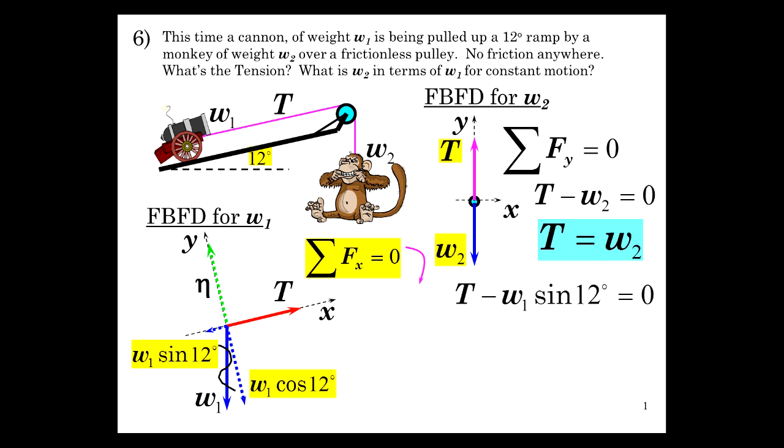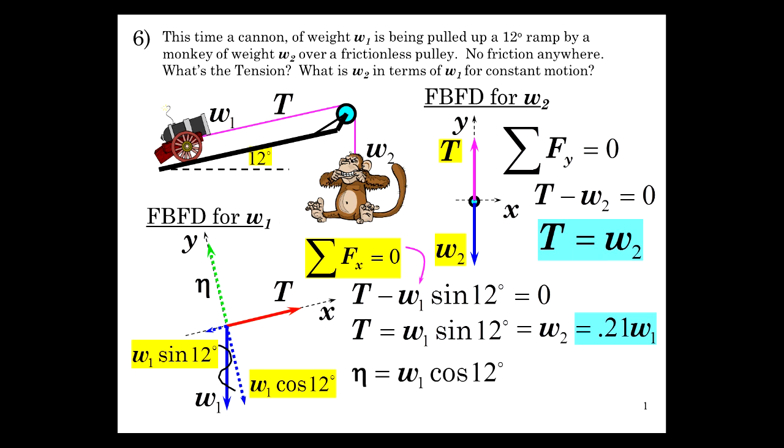T minus w1 sine of 12 equals zero, so T is weight 1 sine of 12, and that's also weight 2 because tension and weight 2 are the same. So it's 0.21 times weight 1, which is w2 in terms of w1. Then the normal is w1 cosine of 12, which is 0.98 w1.